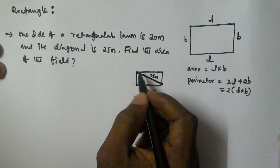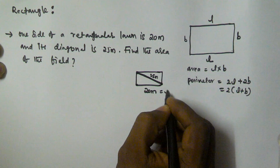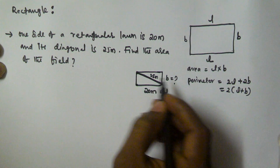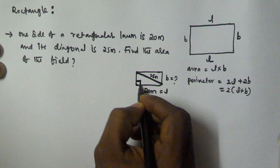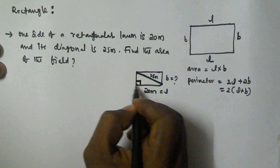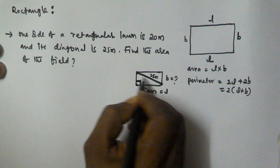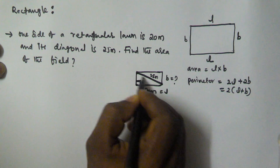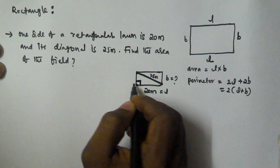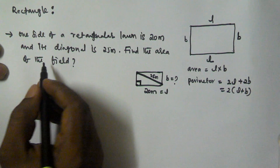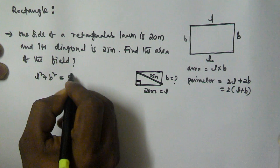Now we have to find the area of the field. We know the length, but we have to find the value of the breadth. Since the rectangle makes 90 degrees at its corner, this part is in the form of a right-angled triangle, and the diagonal is the hypotenuse. According to the Pythagorean theorem, length squared plus breadth squared is equal to diagonal squared.